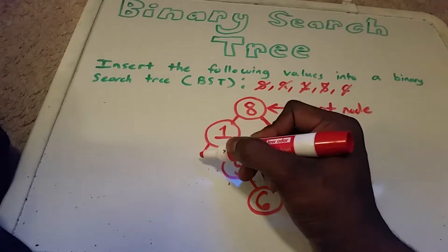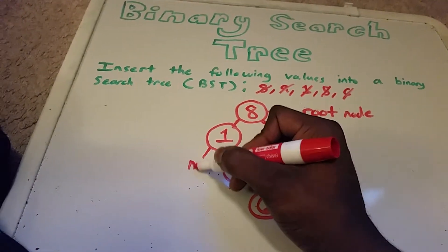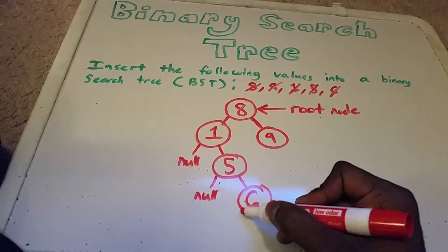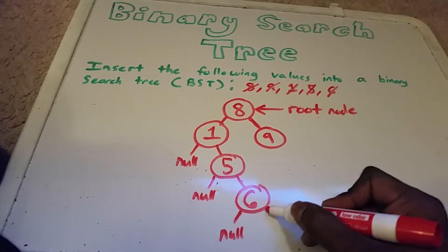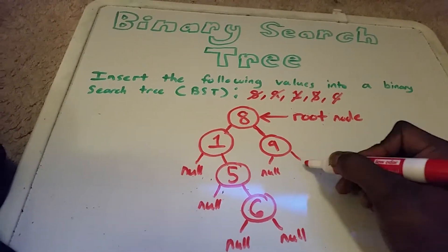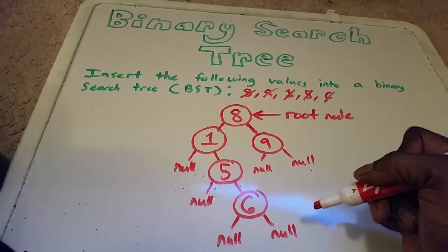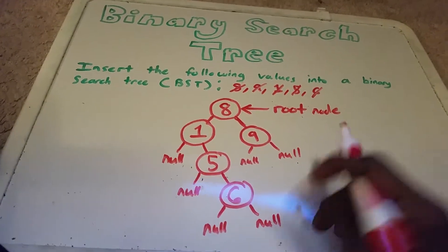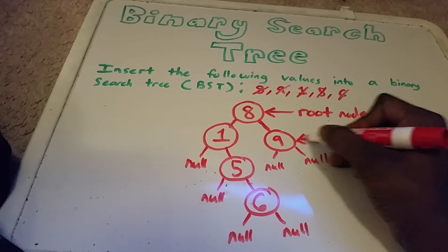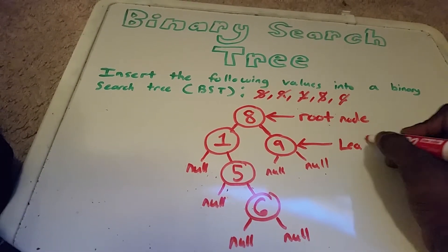And also the tree would actually look something like this in code where the node's children are null if there is no node there. If both children are null then the node is called a leaf node.